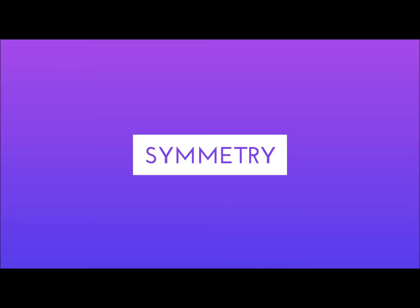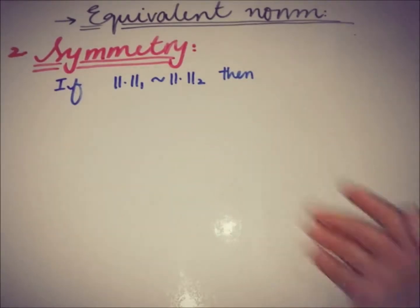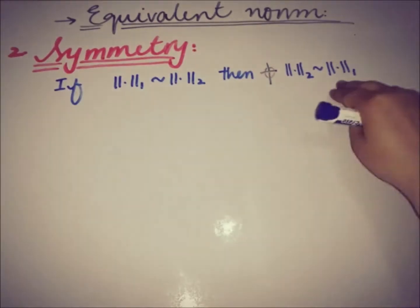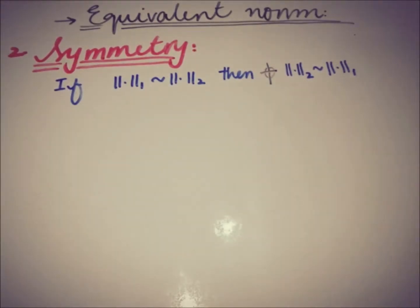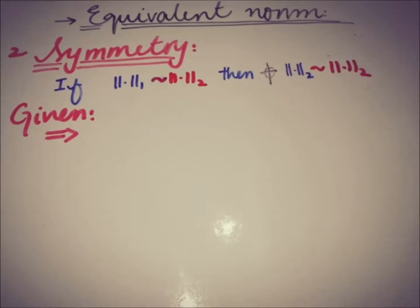Moving toward the second property, symmetry. We are going to show that if norm 1 is equivalent to norm 2, then norm 2 is also equivalent to norm 1. We'll use the first to prove the second.